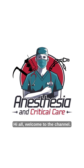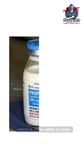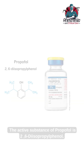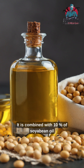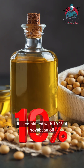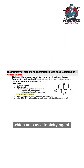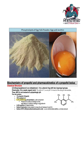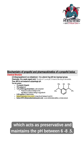Welcome to the channel. Today let's discuss propofol, which is milky white in color. The active substance of propofol is 2,6-diisopropylphenol. It is combined with 10% soybean oil and 2.25% glycerol, which acts as a tonicity agent. It also has 1.2% purified egg phosphatide as an emulsifier.